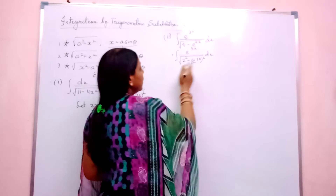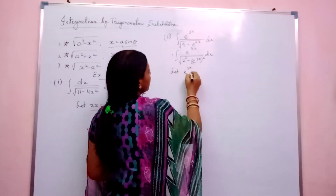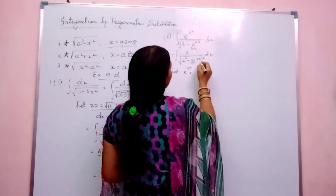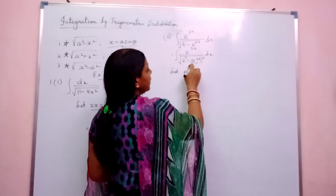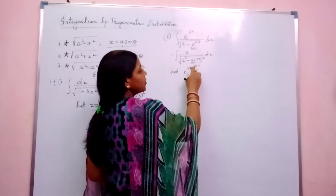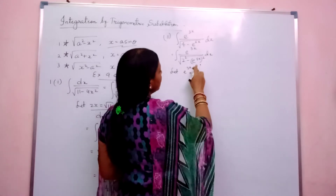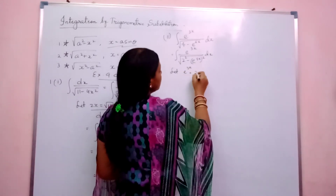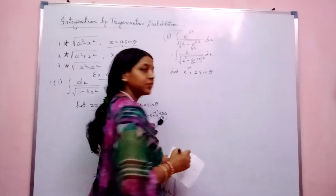Now let us assume that e to the power 3x equals s. It is now in the format of root of a squared minus x squared. So I will write e to the power 3x, that is x, equal to a, that is 2 sine theta. Yes or no?